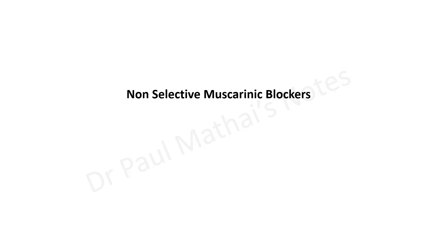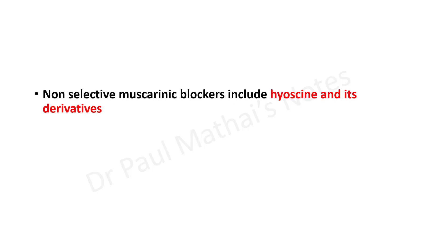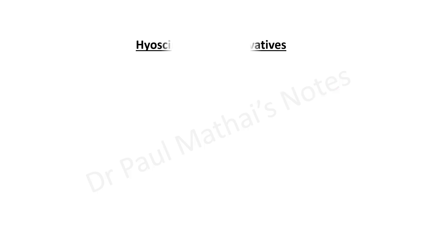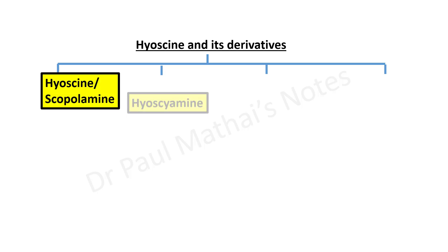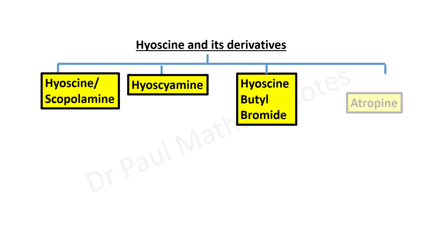Let's move on to the non-selective muscarinic blockers. Non-selective muscarinic blockers include hyosine and its derivatives, as discussed earlier.